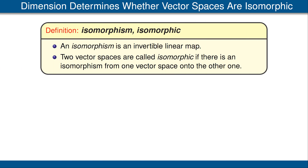We now introduce two new words into our linear algebra vocabulary. The first new word is isomorphism: an isomorphism is simply an invertible linear map. Our second new word is isomorphic. Two vector spaces are called isomorphic if there's an isomorphism from one vector space onto the other, that is, if there's an invertible linear map from one vector space onto the other. We use the word isomorphism when we think of the invertible linear map as simply relabeling the elements of our vector space. The statement that the algebraic operations are the same after this relabeling is really just the statement that the invertible map is indeed linear.